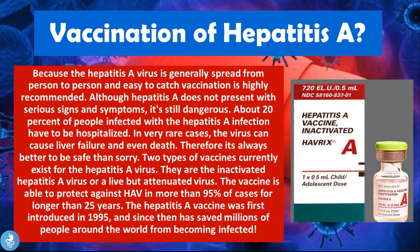Because the hepatitis A virus is generally spread from person to person and is easy to catch, vaccination is highly recommended. Although hepatitis A does not always present with serious signs and symptoms, it is still dangerous — about 20% of infected people have to be hospitalized, and in very rare cases the virus can cause liver failure and even death. Two types of vaccines currently exist: inactivated hepatitis A and live but attenuated hepatitis A. The vaccines protect against the virus in more than 95% of cases for longer than 25 years. The hepatitis A vaccine was first introduced in 1995 and has since saved millions of people worldwide. Make sure your vaccinations are up to date.